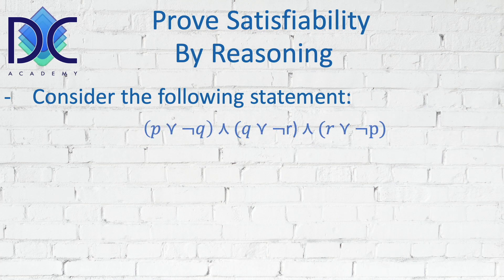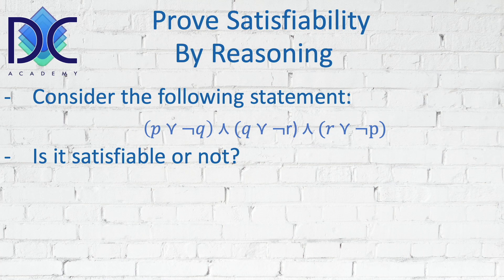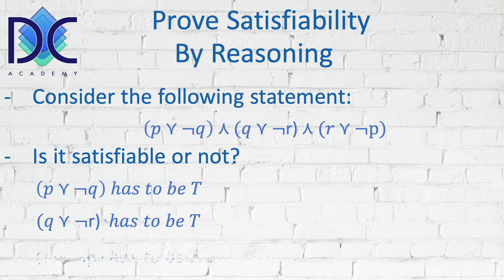Let's look at a way to prove satisfiability by reasoning. Consider the following statement: we have three partial compound propositions — P∨¬Q, Q∨¬R, and R∨¬P — combined as (P∨¬Q)∧(Q∨¬R)∧(R∨¬P). We have to prove whether this is satisfiable or not. In order to be satisfiable, all three parts — P∨¬Q, Q∨¬R, and R∨¬P — have to be true.